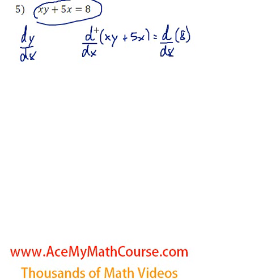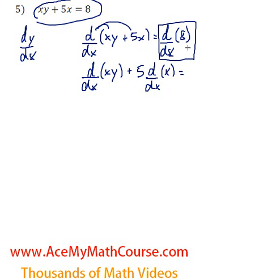So I'll split this up. I'll make d/dx of x times y plus 5 times d/dx of x. Remember that I can always essentially take out the constant, the 5, in this case as long as it's multiplying the variable, and it was, so I can do that: 5 times d/dx of x. And the derivative with respect to x of 8 is just 0, because 8 is a constant.